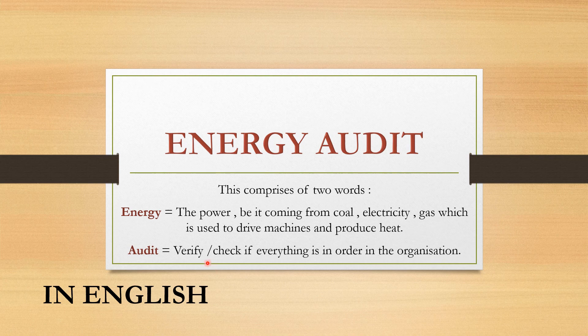Now basically audit — what does it mean? It means the verification and check if everything concerned is in order in that particular organization. When we talk about tax audit, we see about the tax payment and conditions. When we talk about cost audit, we talk about the cost. There can be internal audit, external audit, statutory audit. Today we are just going to focus on the energy audit — to check whether everything concerned to energy is in order in that particular organization.